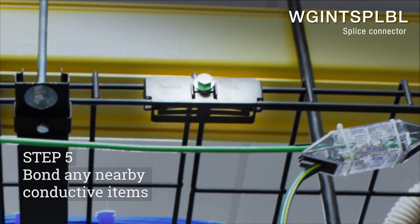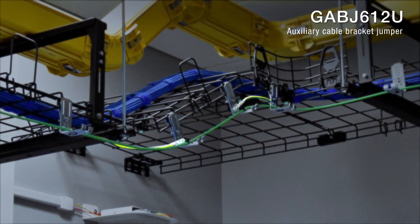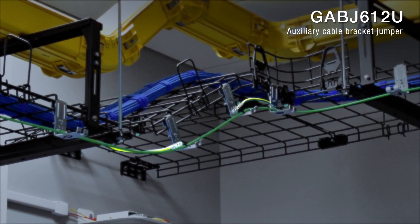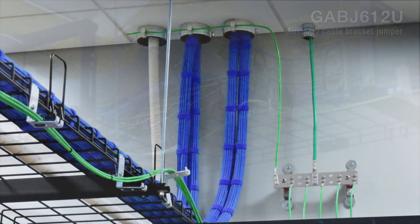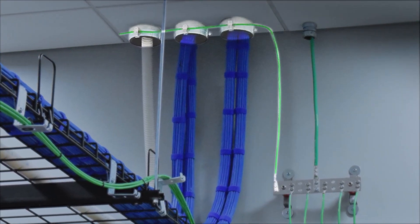Step five is to bond any nearby conductive items. This means ensuring ladder racks and cable tray sections are electrically continuous, any armored cable is properly bonded, and any exposed building steel and conduit are also connected to the bonding network and back to the bus bar.